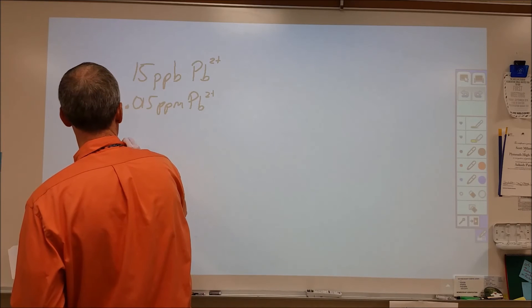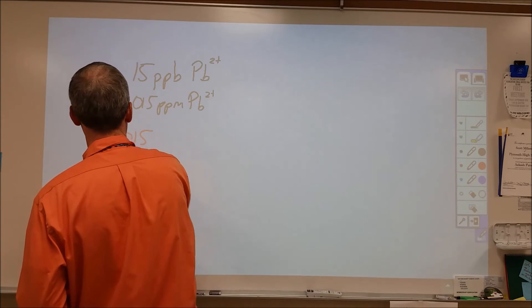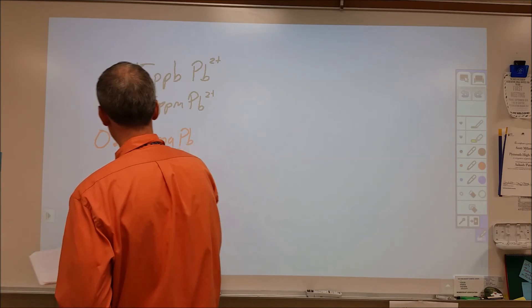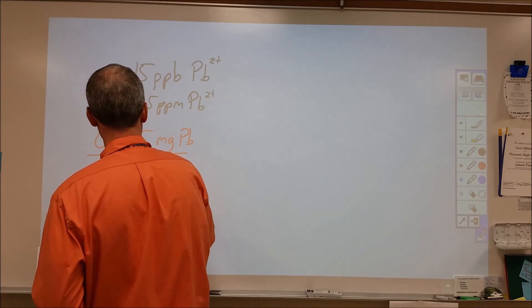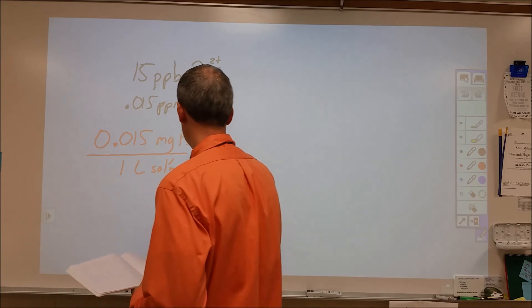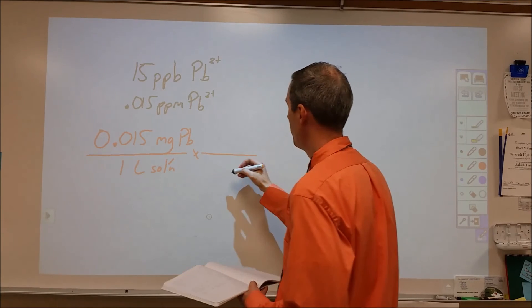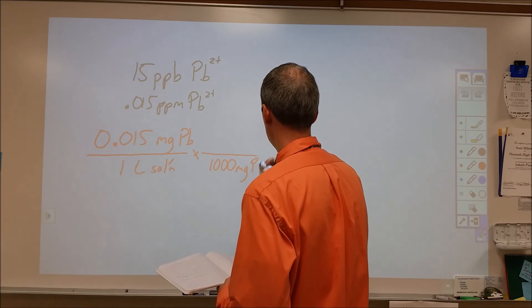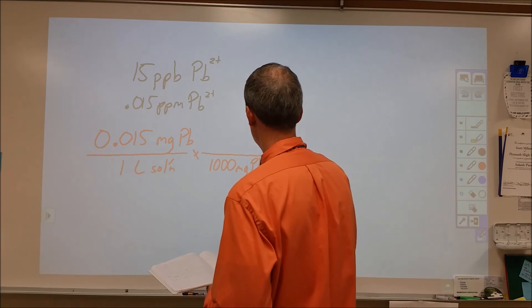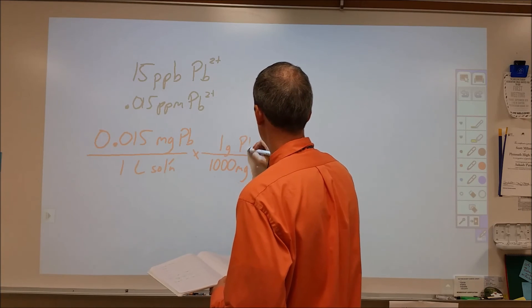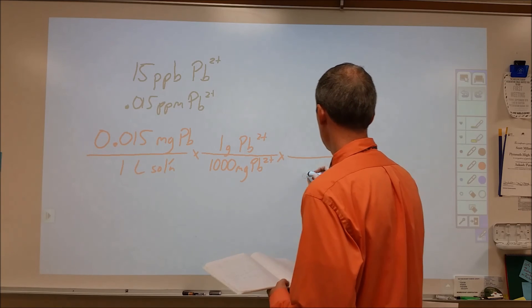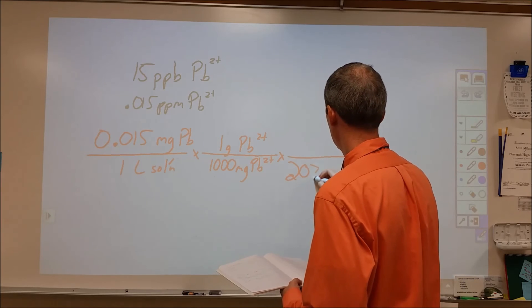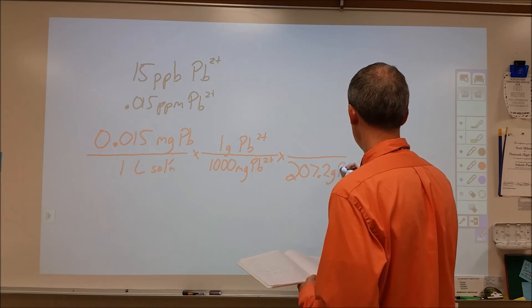So 0.015 parts per million, I would write down 0.015 milligrams of lead per one liter of solution. I'm going to change milligrams to grams, and then I'm also going to change grams to moles. So 207.2 is the molar mass of lead.